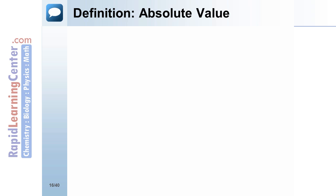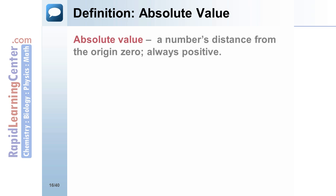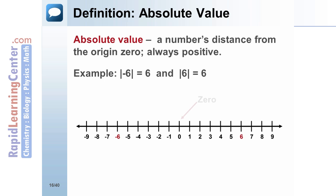Absolute Value is a number's distance from the origin 0, and is always positive. For example, the absolute value of negative 6 equals 6, and the absolute value of 6 is also 6. Both numbers are 6 units from the origin 0.